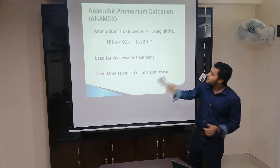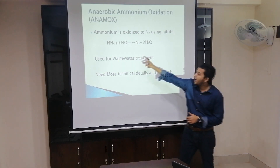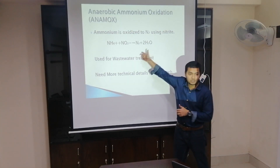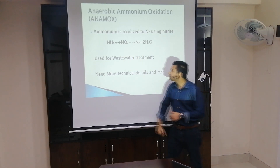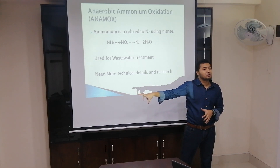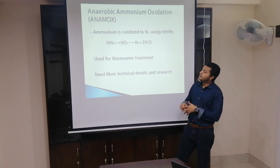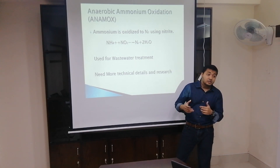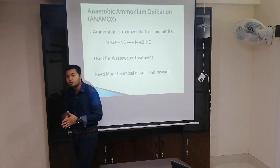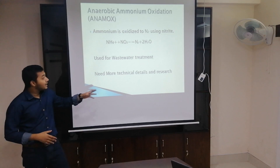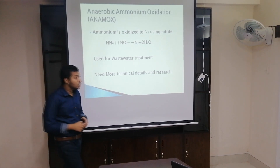The next one is anammox. You can see the reaction: ammonium is oxidized with nitrite and nitrogen gas is produced. Both oxidation and reduction take place — specifically the reduction of nitrite. Anammox is basically used for wastewater treatment, but it is definitely not restricted to that. More research is ongoing because it can be used for carbon layer offset removal. Anammox is actually responsible for around 50% of nitrogen removal from the ocean.